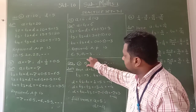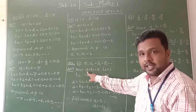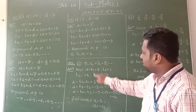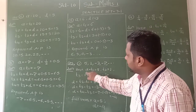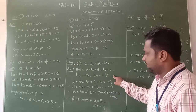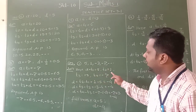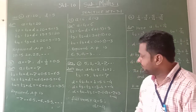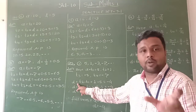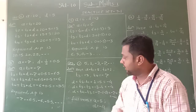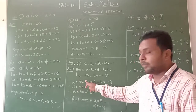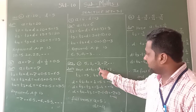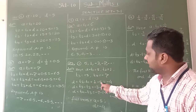First, we write the terms: the first term A, or T1, is equal to 5. The second term T2 is equal to 1. T3 is equal to minus 3, and T4 is equal to minus 7. Now from this arithmetic progression we find the common difference. D is the difference between two consecutive terms, given by second term minus first term. Therefore, T2 minus T1 is equal to 1 minus 5, which gives minus 4.